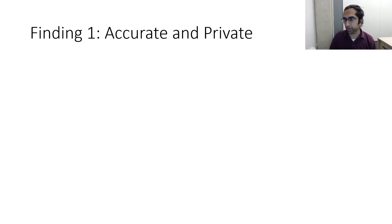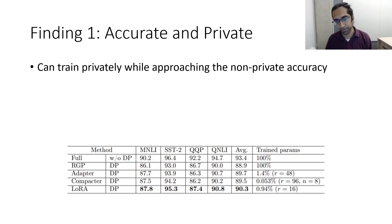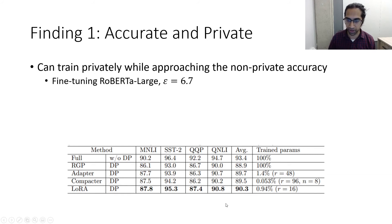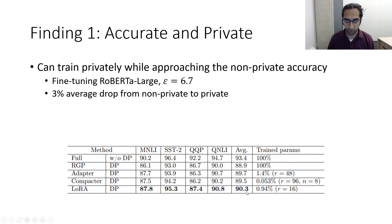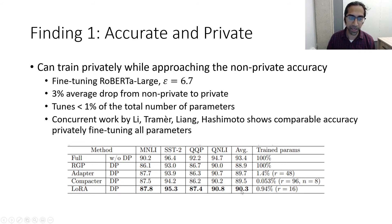Our first key finding is that you can train these models privately while approaching non-private accuracy. Here are results on GLUE tasks with and without privacy on RoBERTa-large with epsilon equals 6.7. The best result uses LoRA and achieves an average accuracy drop of only 3.1 percent from non-private to private, while tuning fewer than one percent of parameters. There is also interesting concurrent work by Li, Tramer, Liang, and Hashimoto showing comparable accuracy while privately fine-tuning all parameters.